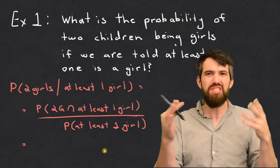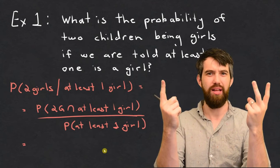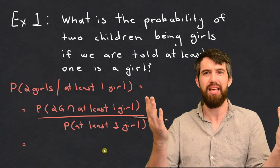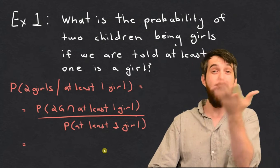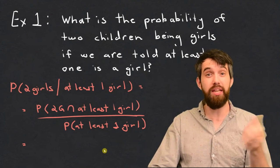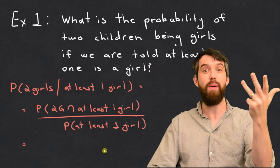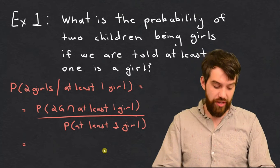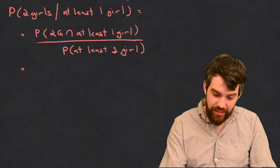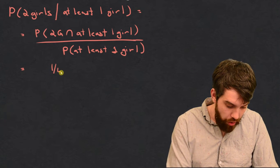It's a funny expression: what's the probability that you have two girls and at least one girl? Every single scenario where there's two girls, of course, is going to have at least one girl. So the intersection is just the same as the probability of two girls, which is exactly one quarter. There are four possibilities — girl-girl, boy-girl, girl-boy, and boy-boy — and one of those four is two girls. So the top is one quarter.